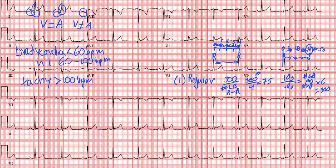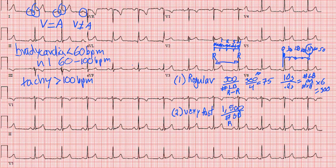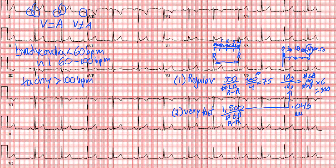For a very fast rate where you can't use large boxes, you can do something very similar using small boxes. You do 1,500 divided by the number of small boxes between the R-to-R interval. The 1,500 comes from the same math, except using 0.04 seconds as the size of each small box. So for very fast rates, use 1,500 divided by the number of small boxes in the R-to-R interval.